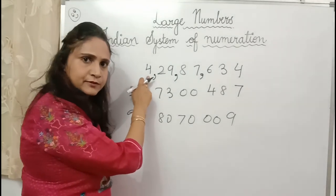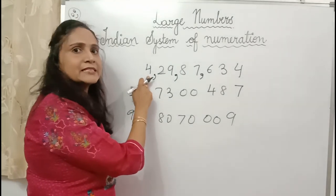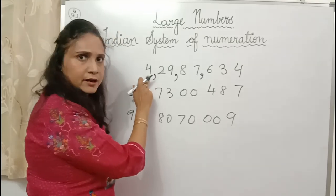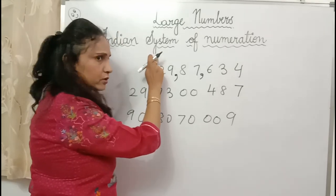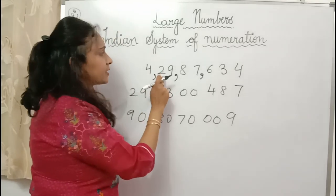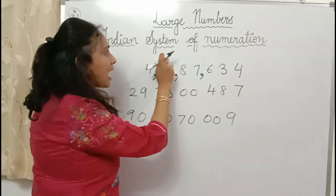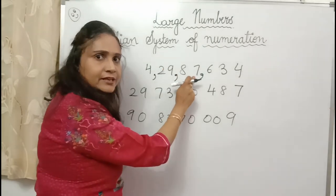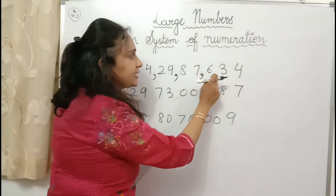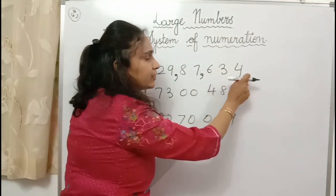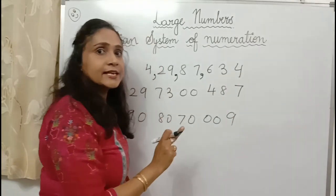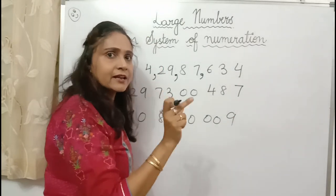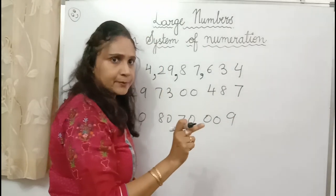The last digit is crore, so we start reading from the crore family. For example: four crore, twenty-nine lakh, eighty-seven thousand, six hundred thirty-four. In one's period, you will not write the period name.